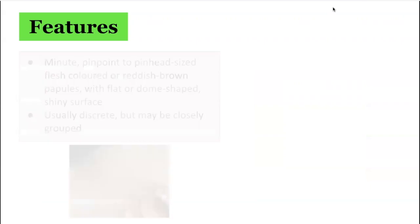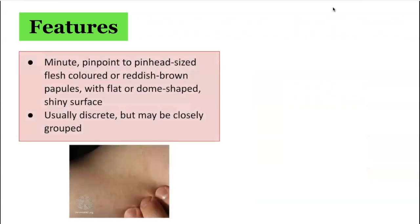In terms of the features of lichen nitidus, this condition is characterised by numerous tiny discrete skin-coloured, pinhead-sized papules. Individual papules are usually flat with a shiny surface, and occasionally they can have a central depression. Although most are flesh or skin coloured, these papules can exhibit a variety of hues, from pink, to yellow, to red, blue, to brown.